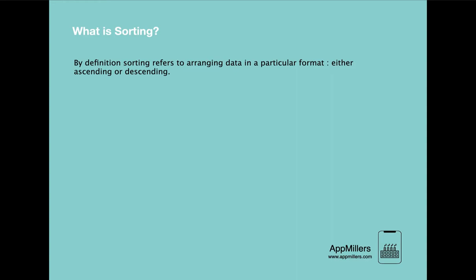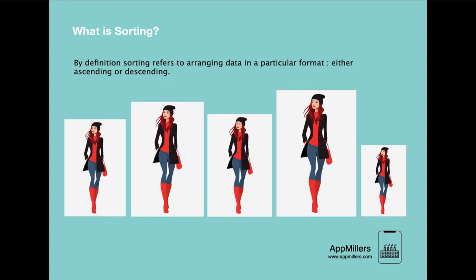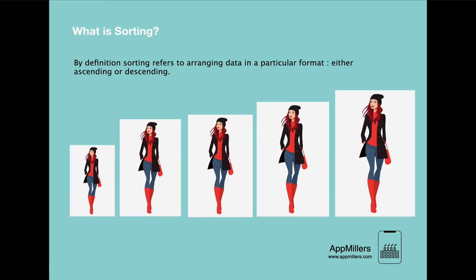Let's see an example to make this definition more clear. Here we have five different size photos of a lady, and the height of these photos are different and not in a particular order. If we apply any sorting technique, they will be arranged in ascending order of their height. For sorting we have different techniques, as we are going to learn in our upcoming lectures, and we can apply any of them to get this order.